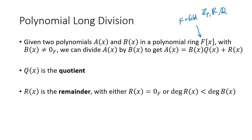We want to divide a of x by b of x to get a quotient and a remainder. The equation we're looking for is a of x equals b of x times q of x plus r of x, where q of x is the quotient and r of x is the remainder, which is either the zero polynomial or has degree less than the degree of b of x.